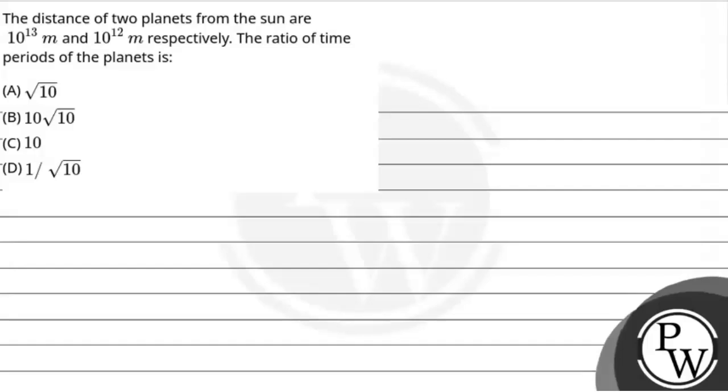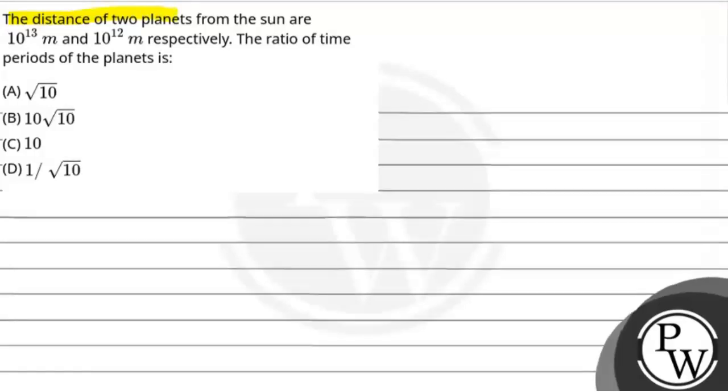Hello Bajo, let's read this question. The question says, the distance of the two planets from the Sun are 10 to the power 13 and 10 to the power 12 meter. The ratio of time periods of the planet is.